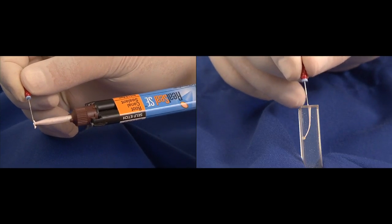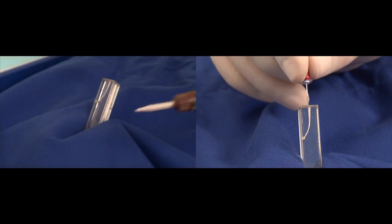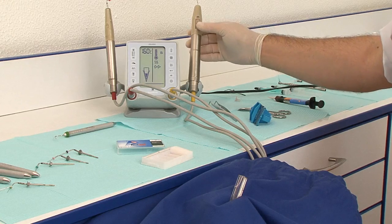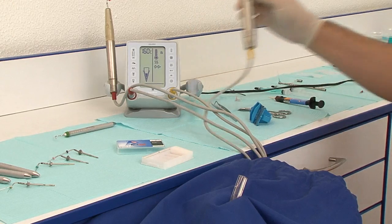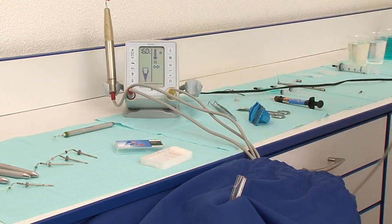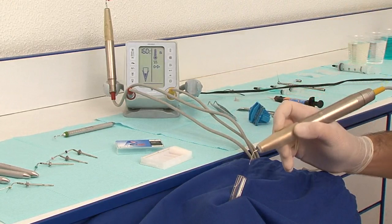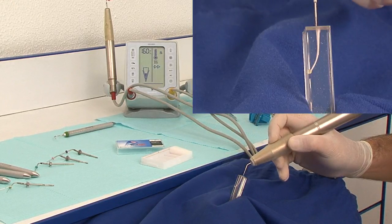We take a manual plugger and we plug the apical area. A bit of sealer is delivered. It can be delivered with a clean file, with a cone, or with a paper point.